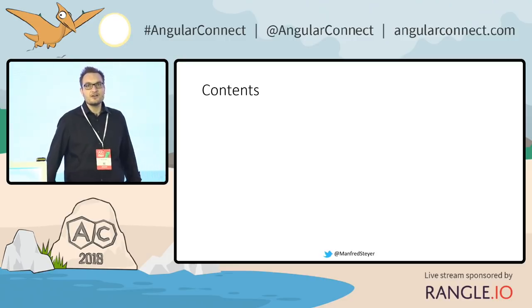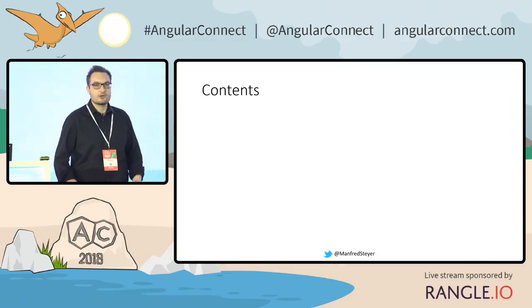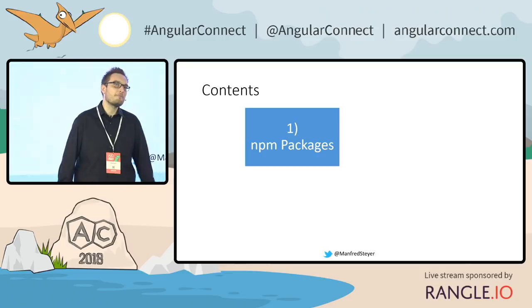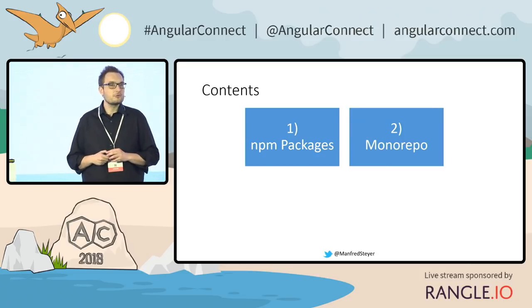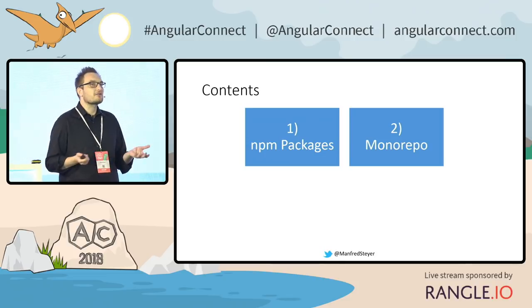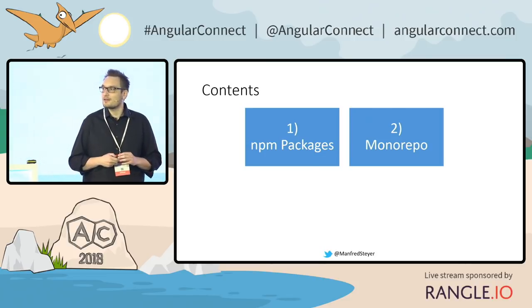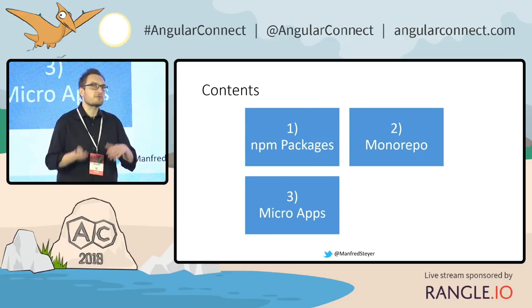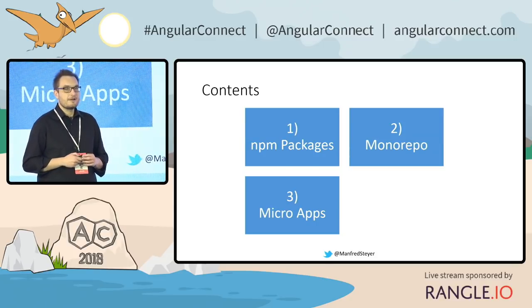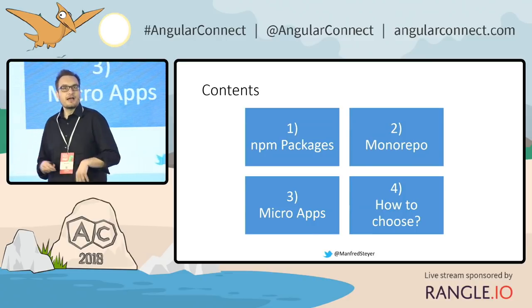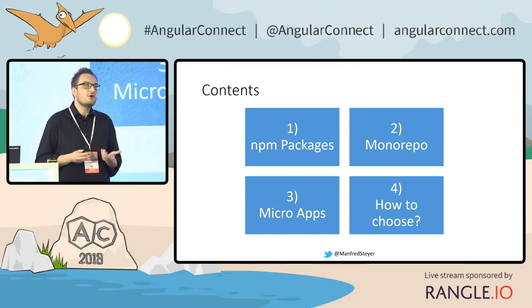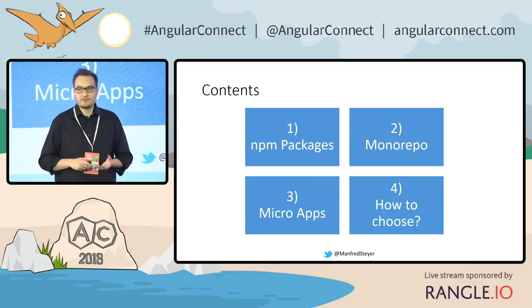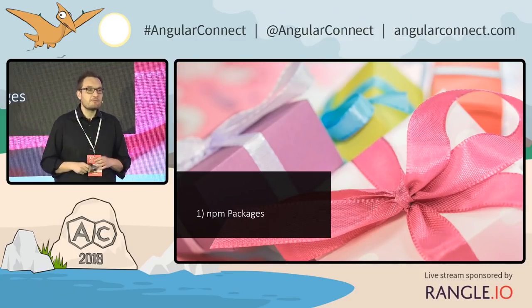In this talk, I want to give you three ideas of how to avoid such a Frankenstein monster within your projects. I'll start with something quite obvious: NPM packages. Then I'll move on to the mono repo, which is quite common nowadays in Angular development. And as a third point, I'll speak about microapps — microservices, microfrontends, as you want to call them — and at the end I'll give you guidance on how to choose the right solution for your very specific needs.